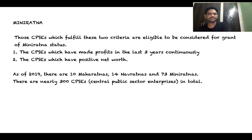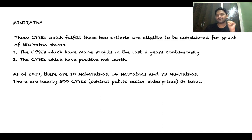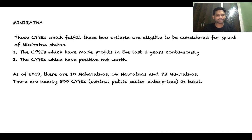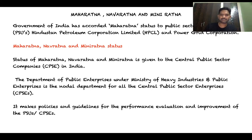To be called a Miniratna, a company must be profit-making continuously for the past three years and must have a positive net worth — more assets than liabilities. Financial and operational autonomy is granted to companies declared as Miniratna, Navaratna, and Maharatna, with different types of autonomies for different categories. As of 2019, there are 10 Maharatnas, 14 Navaratnas, and 73 Miniratnas out of a total of 300 central public sector enterprises.